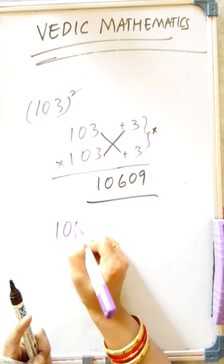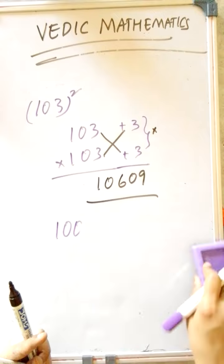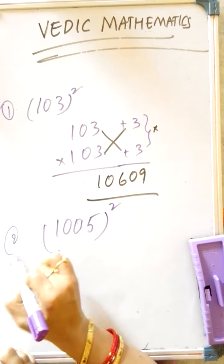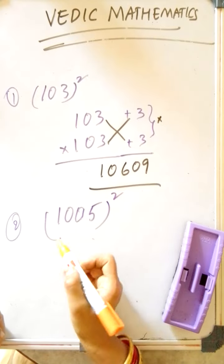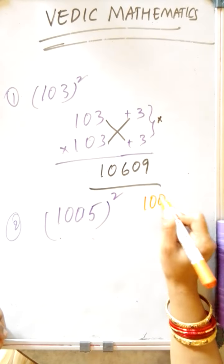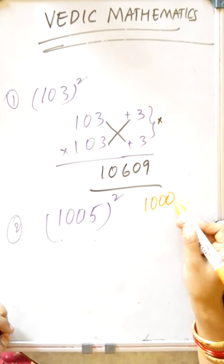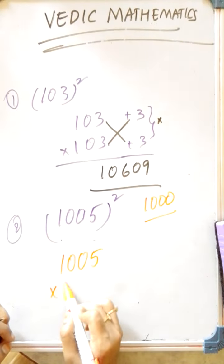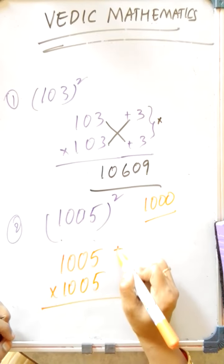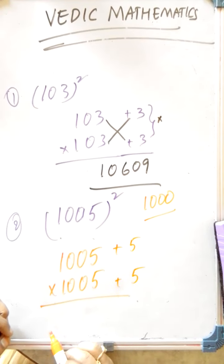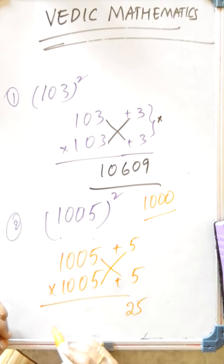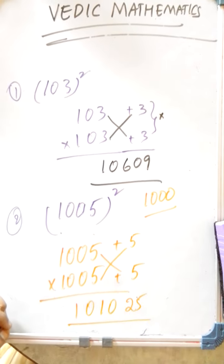Now, 1005 squared. Here, in this case, 1005 is of base 1000. 1005 means 1000 plus 5 — plus 5 is greater from 1000. 5 square is 25 here. If I add: 1005 plus 5 is 1010. The answer is 1010025.